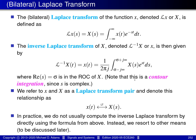As a matter of terminology, x and X are said to constitute a Laplace transform pair. This relationship is denoted by this notation here, where the thing on the left of the double arrow, x, is the original function, and the thing on the right of the double arrow is its corresponding Laplace transform, X.